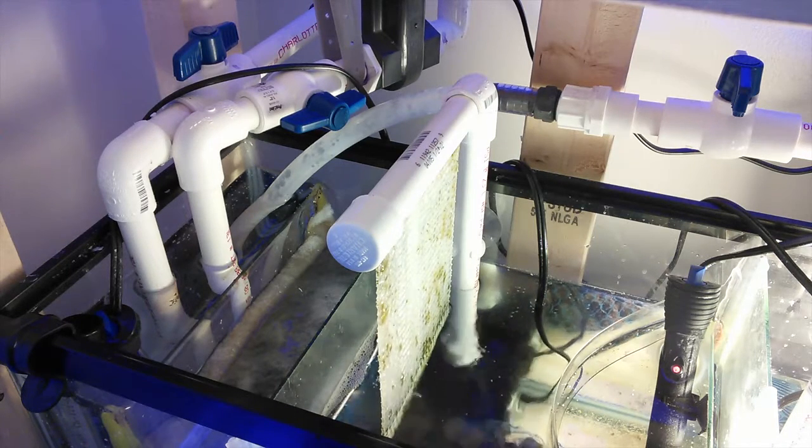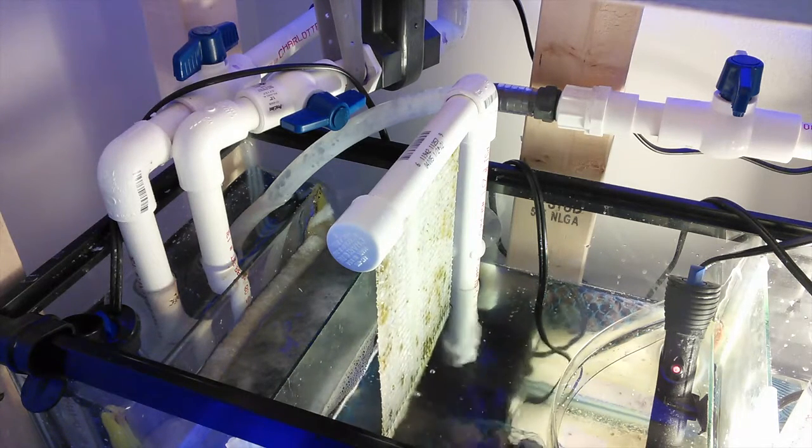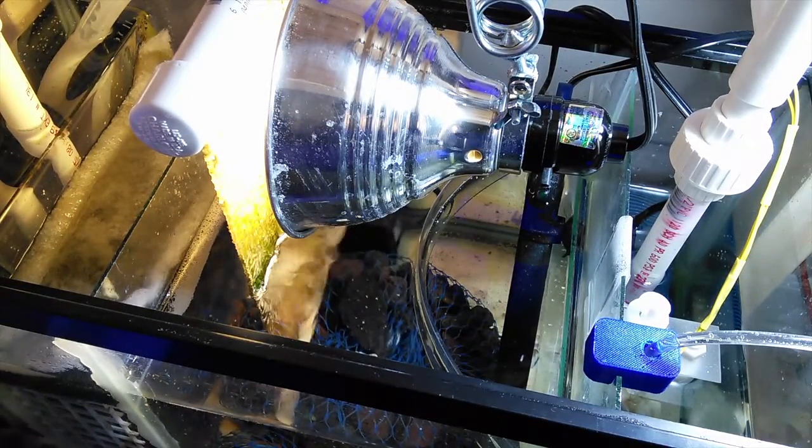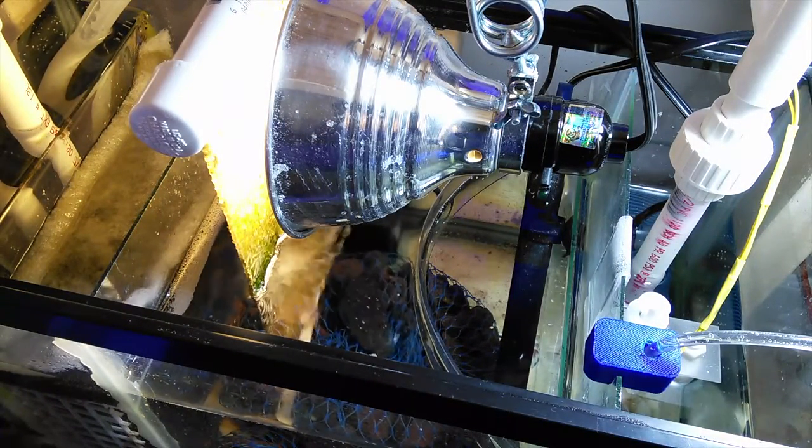The assembled unit is attached to the floor of the sump by the suction cups on the bottom of the power head. The suction cup placed on the riser pipe secures it to the side of the sump.